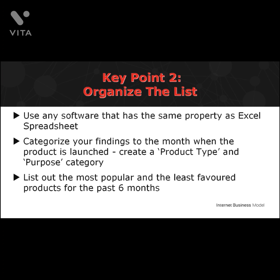A hybrid product is a combination of two different product types — for example, a web-based software that generates graphics and logos. The last category is Purpose: is the product created for traffic or list building, email marketing, SEO, or logo and graphics creation? When you've listed out all the featured products, you'll see a pattern — a list of the most and least popular products for the past six months.